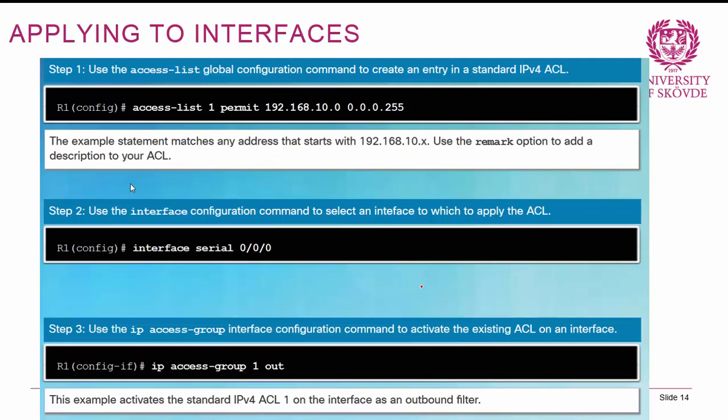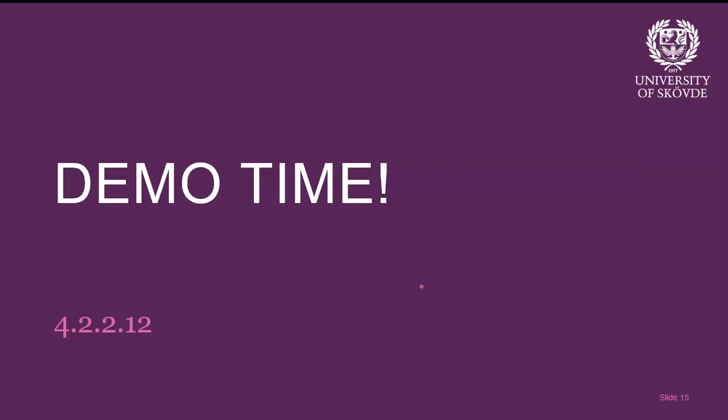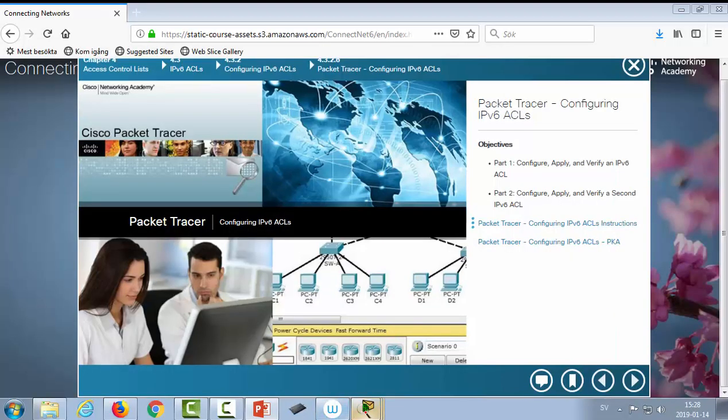To apply an access list to an interface, once the list is created, go into the interface and use the command 'ip access-group' followed by the number or name of the ACL and then the direction. For example, to apply access list 1 outbound to serial interface 0/0/0, enter that interface and type 'ip access-group 1 out'. Now let's go ahead and do a demonstration.